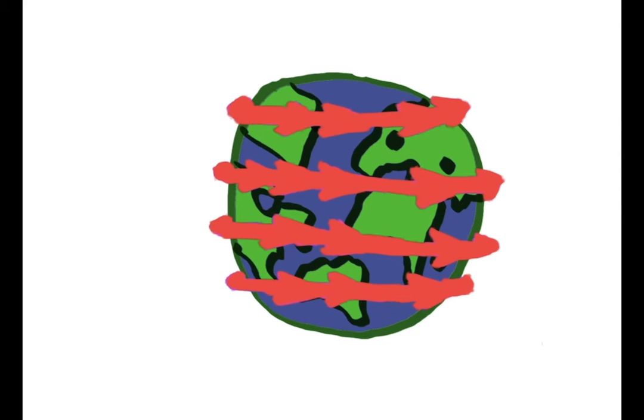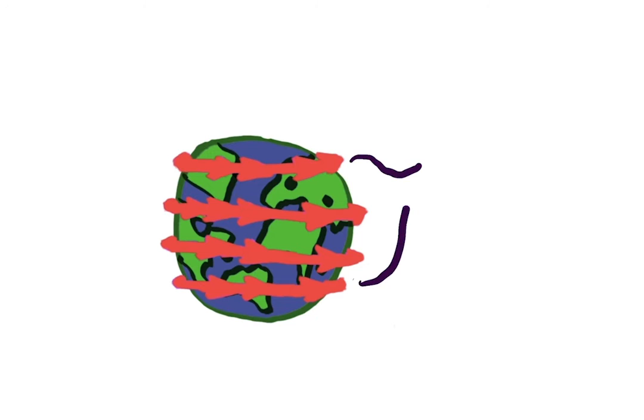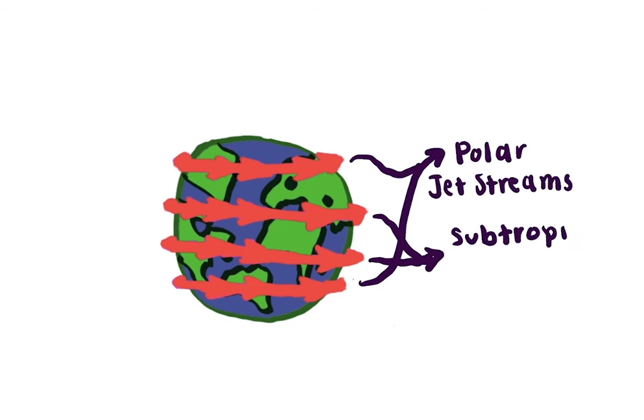Jet streams are a consistent path of strong wind on our Earth. The top and bottom are named the polar jet streams and the middle two are named the subtropical jet streams.